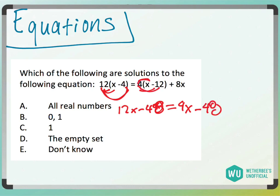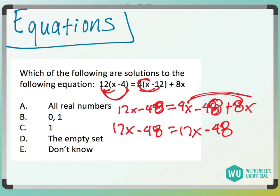4x minus 48 plus 8x. So this is going to be 12x minus 48, and then this equals, I have a 4x plus an 8x, which would be 12x minus 48. So we want to know, what are solutions to this following equation?